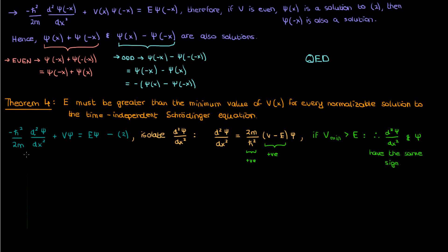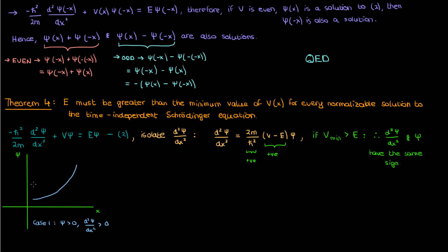A function whose second derivative has the same sign as the function itself is not normalizable. Let's look at three graphical cases. If ψ is positive, then the second derivative is also positive, so ψ is concave up and its derivative is constantly increasing — ψ gets further and further from the x-axis. It must approach 0 at ±∞ to be normalizable, but it cannot. Even if the derivative starts out negative, it will eventually increase enough that ψ rises without bound — so the function is not normalizable.